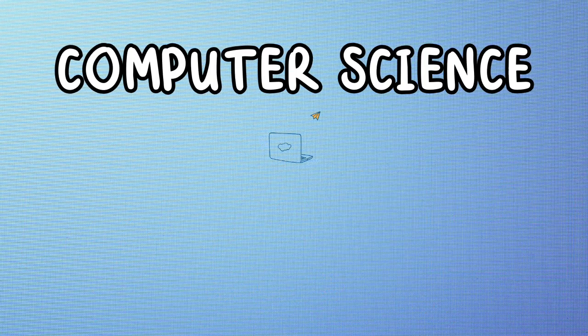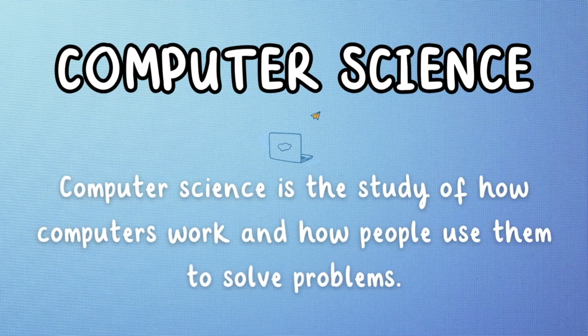So what is the computer science meaning? Computer science is the study of how computers work and how people use them to solve problems.